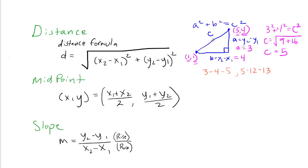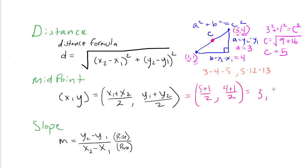Going back to our original two points, the midpoint is going to be x1 plus x2 over 2 — the average of the x's — which in this case is 5 plus 1 over 2, comma, y coordinate. Your midpoint is an xy coordinate. The average of the y's is 4 plus 1 divided by 2. That means our midpoint is 6 over 2, which is 3, comma, 5 over 2 — the point that's exactly in between the two given points.